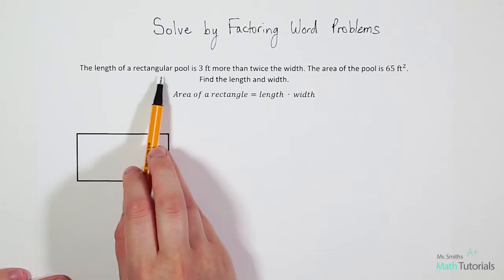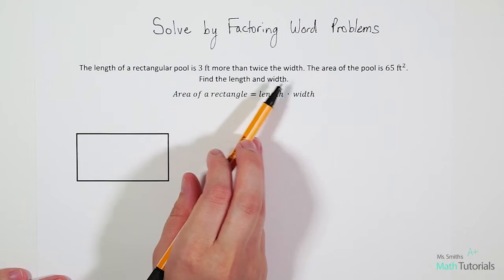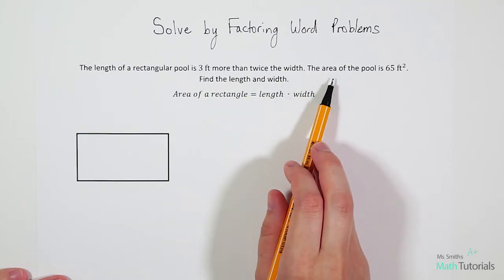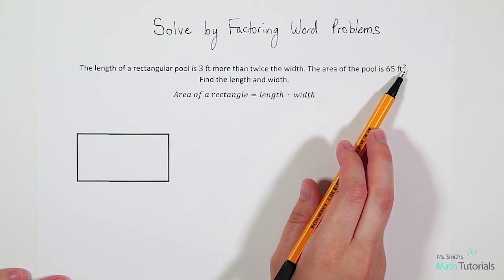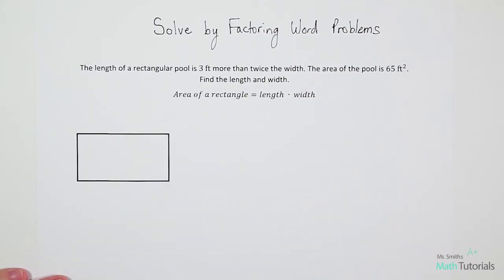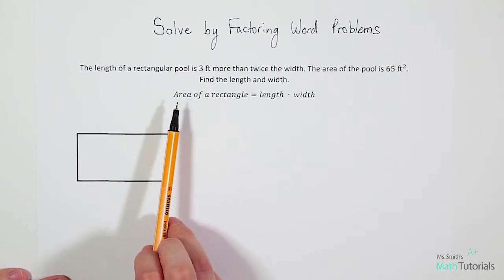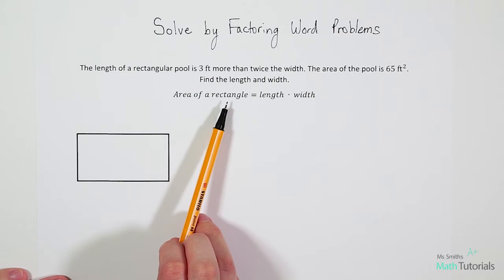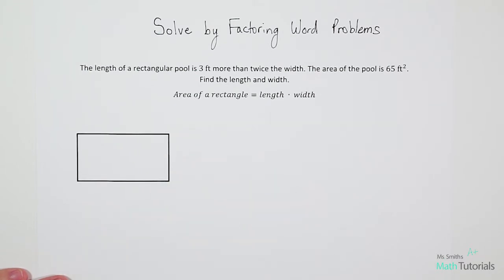The length of a rectangular pool is three feet more than twice the width. The area of the pool is 65 feet squared. Find the length and width. I've added a helpful reminder that whenever we have a rectangle, if we want to find the area of a rectangle, it's always length times width. So we'll use that information in just a moment.